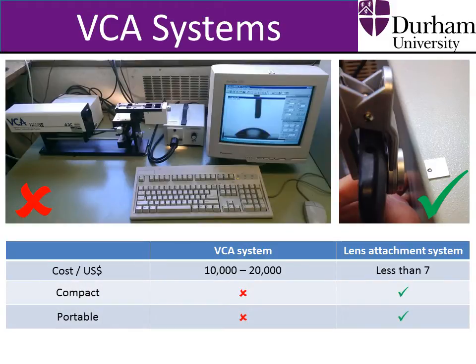For example, with plant surface characterisation, this would negate the need for sample cutting to be taken, sufficiently preserved, and then safely transported for contact angle analysis. You could simply take the droplet image on the plant, and then save the image for later analysis, or perform contact angle measurements straight away if you had access to a laptop.